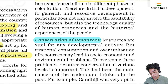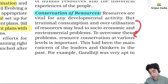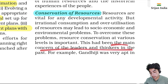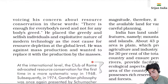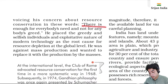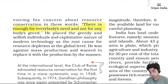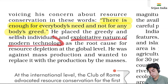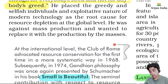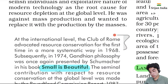Resources are vital for developmental activity, but irrational consumption and over-utilization cause socio-economic and environmental problems. That is why we try to conserve resources. Gandhi ji said: there is enough for everybody's need but not for anybody's greed. He criticized the greedy and selfish individuals and exploitative nature of modern technology as the root cause of resource depletion at the global level. He was against mass production and wanted production by the masses. The Club of Rome first advocated resource conservation systematically in 1968.